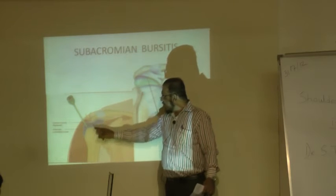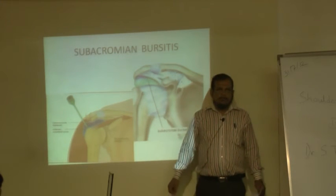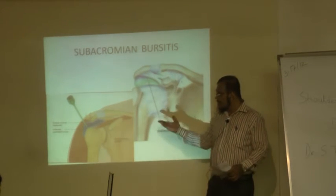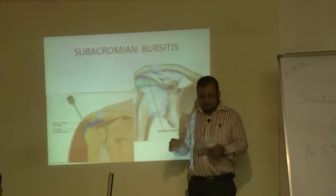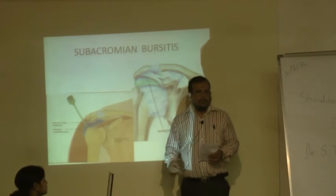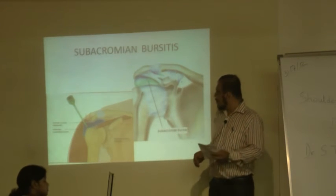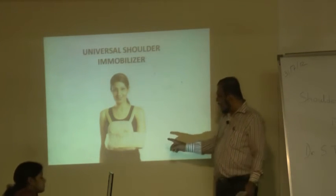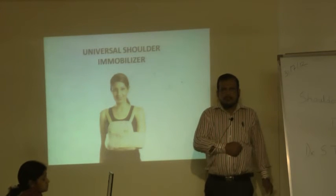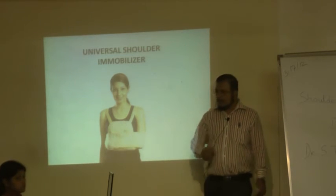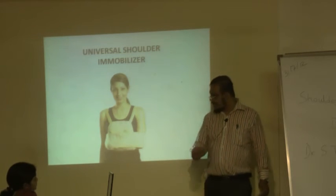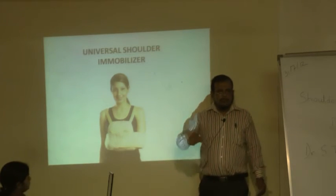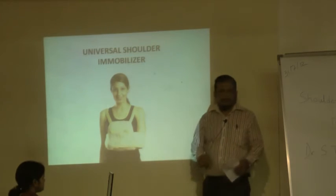When the subacromial bursa becomes inflamed, you again get that painful arc syndrome — pain from 60 to 120 degrees. Most of the time simple analgesics and rest solve the problem. We sometimes use a universal shoulder immobilizer or a shoulder pouch. With the immobilizer, the shoulder is fully fixed and the patient cannot move it at all. With a pouch, the arm just hangs and rests, allowing some movement.